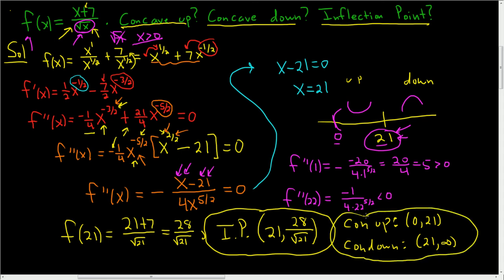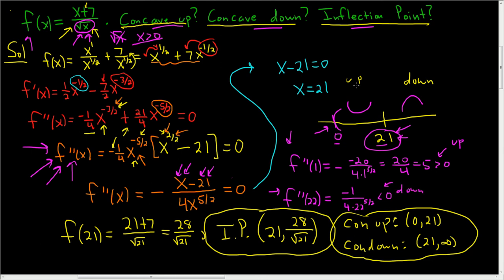To recap: whenever you need to find concavity and inflection points, start by taking the second derivative — you do not use critical numbers at all, so never set the first derivative to zero. Set the second derivative equal to zero, plot solutions, plot any vertical asymptotes, and account for domain restrictions. Pick test points and plug into the second derivative: if positive, concave up; if negative, concave down. When concavity changes, you have an inflection point — plug that x value back into the original function.